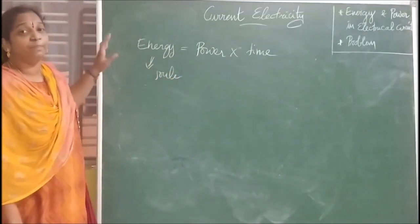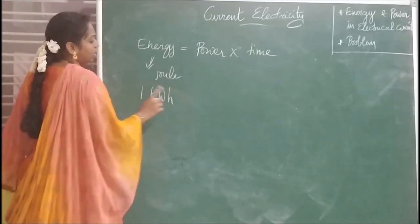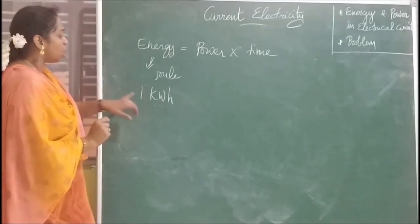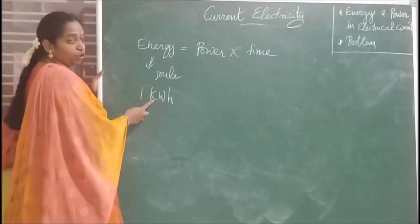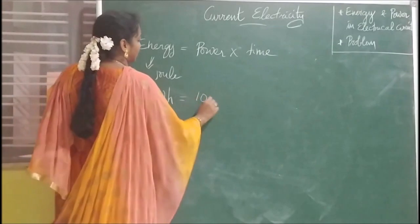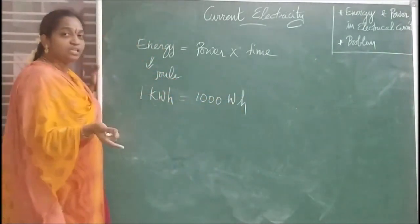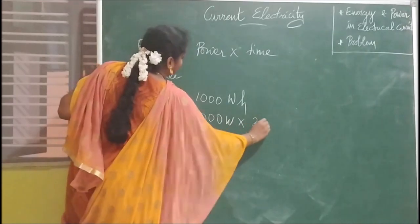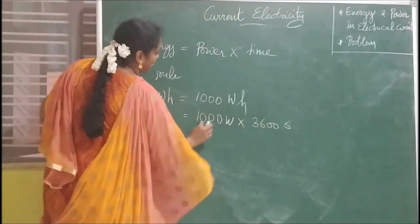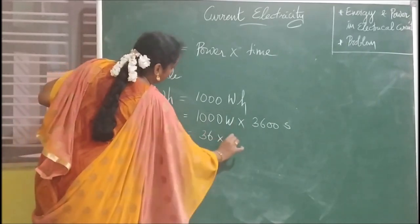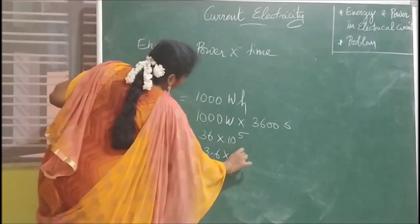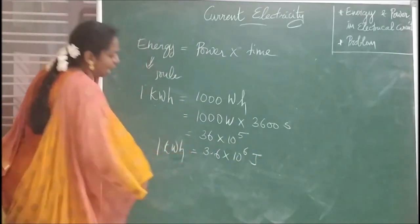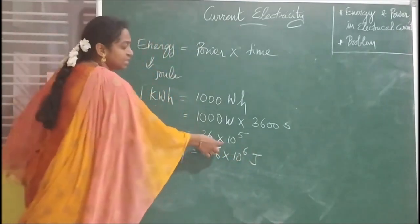Practically speaking, electric energy is represented by another unit — the kilowatt-hour. One kilowatt-hour is one unit of electric energy. To represent this in joules: kilo means 10³, so one kilowatt-hour equals 1000 watts into one hour, and one hour equals 3600 seconds. Therefore, one kilowatt-hour equals 3.6 × 10⁶ joules.